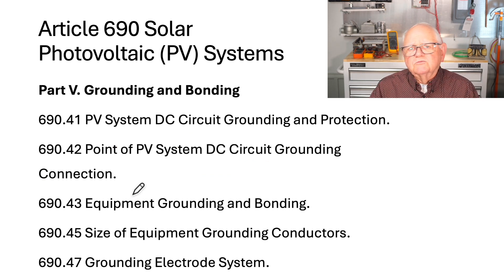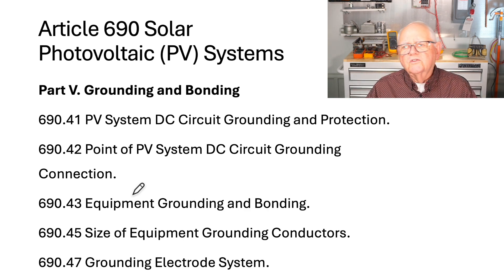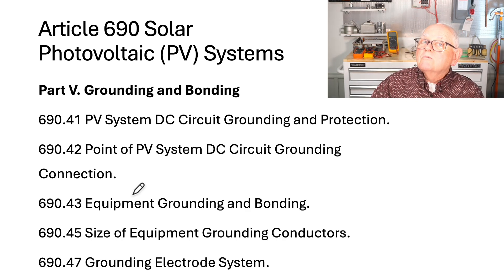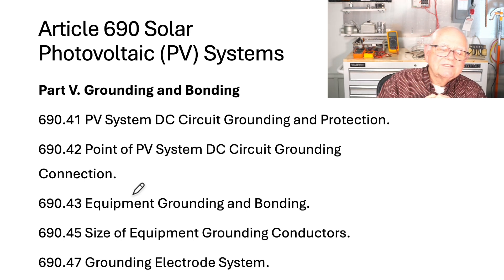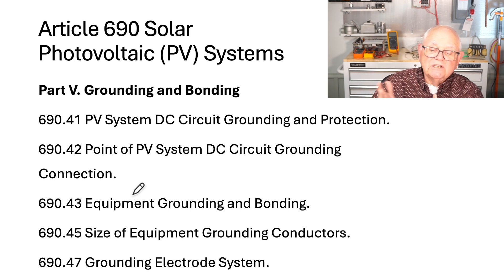Article 690 is on solar PV systems, and it's a separately derived system. You take DC power from a solar array, put it through an inverter, change the DC into AC, and take that AC out to loads or the grid. If you look in Part 5 of Article 690, you'll find five requirements for grounding and bonding of PV systems: 690.41 on DC circuit grounding and connection; 690.43 on equipment grounding and bonding; 690.45 on sizing equipment grounding conductors; and 690.47 on the grounding electrode system.